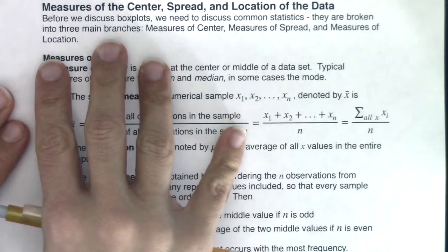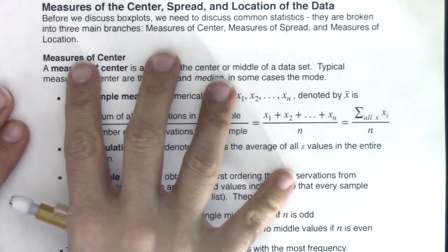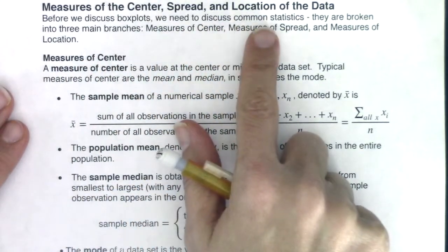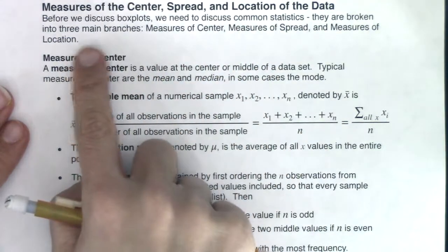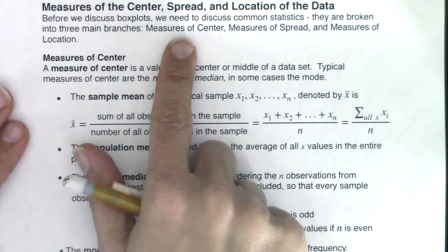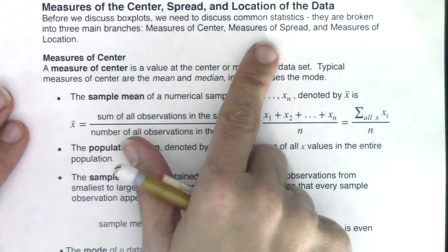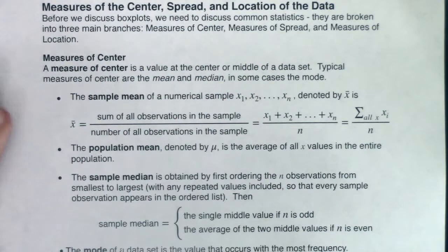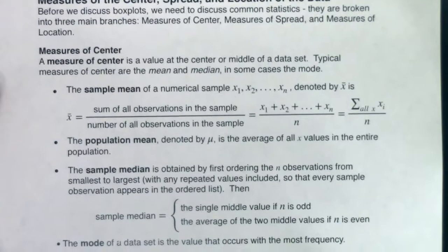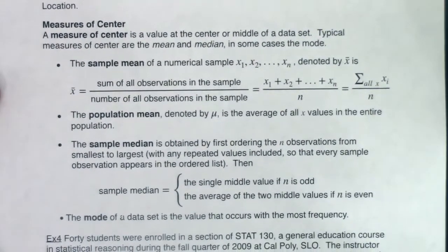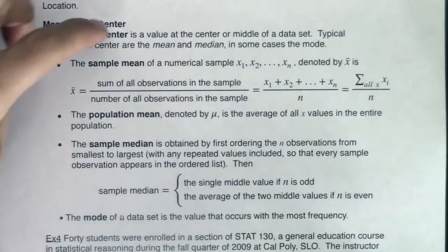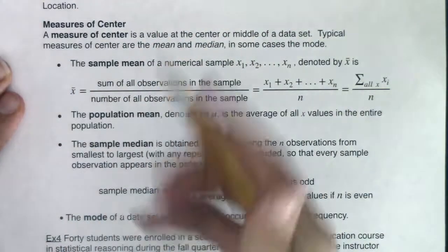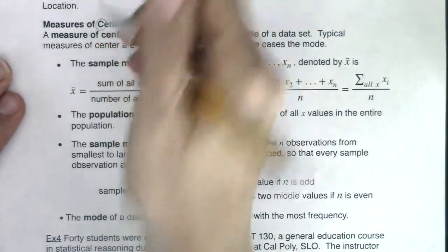And this is all leading up to box plots. But before we discuss box plots, we need to discuss common statistics. They are broken into three main branches: measures of center, measures of spread, and measures of location. So for right now, we're going to talk about measures of center. And when we talk about measures of center, this is the C in your SOCKS. So after we go through this, you can answer the C part of your SOCKS.